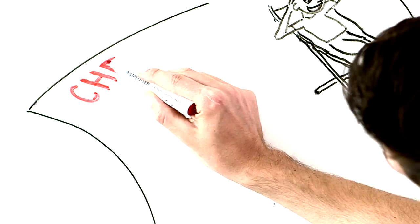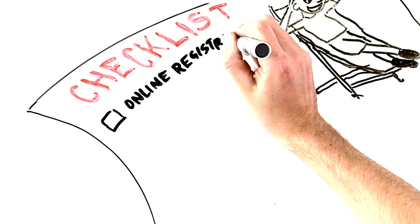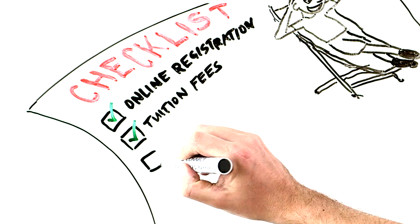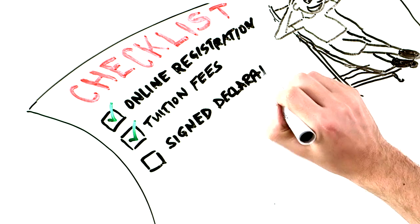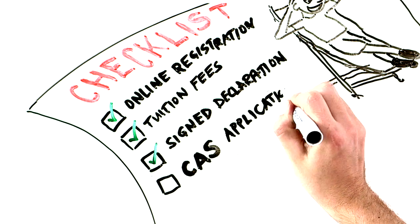Before you arrive at SOAS, make sure you've completed all the relevant checks: completion of online registration, paid or made provision to pay your tuition fees including returning your signed declaration to your funding body if you're getting a loan, and applied for a CAS if you need to obtain a Tier 4 visa.